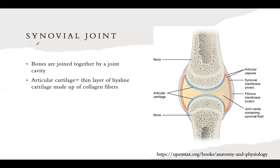We're going to talk more about synovial joints because rheumatoid arthritis primarily affects synovial joints. Bones are joined together by a joint cavity, and on the ends of the bones there is articular cartilage, which is made up of a thin layer of hyaline cartilage and collagen fibers. The synovial membrane produces synovial fluid, which provides lubrication between the bones and allows them to move easier, and also provides cushion. The fibrous membrane provides more support for the joint.